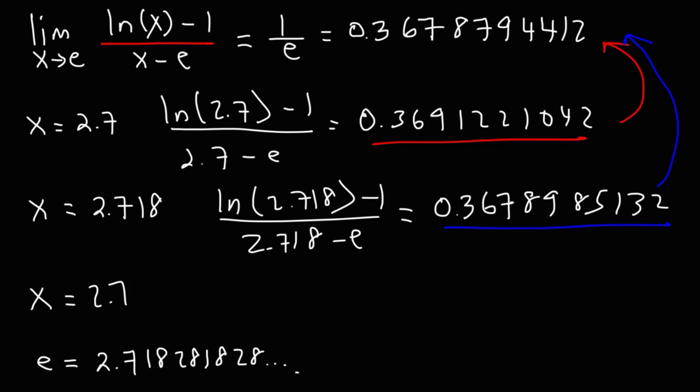And we can try one more. Let's try 2.71828. So I got 0.3678795654, and that's close enough. I mean, we have the first six digits correct after the decimal, which I think is pretty good. But that's how you can evaluate this particular limit.